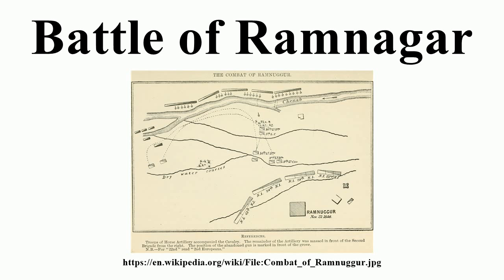Background: Following the Sikh defeat in the First Anglo-Sikh War, British commissioners and political agents had effectively ruled the Punjab, using the Sikh army, the Khalsa, to maintain order and implement British policy. There was much unrest over this arrangement and the other galling terms of the peace treaty, not least within the Khalsa, which believed it had been betrayed rather than defeated in the First War.